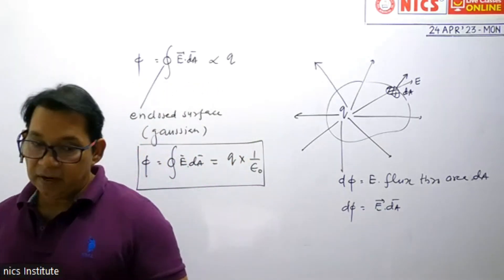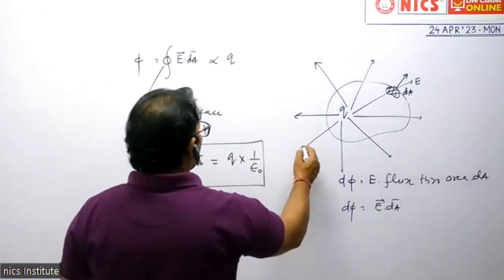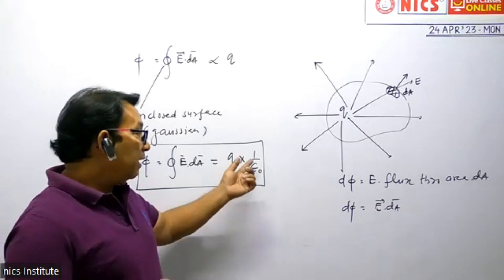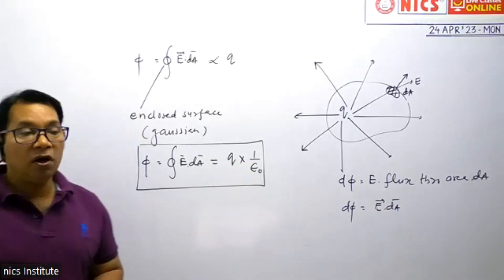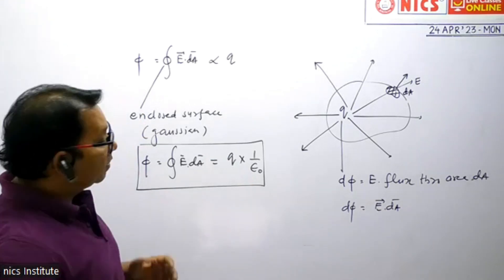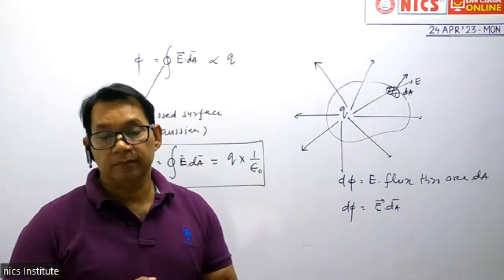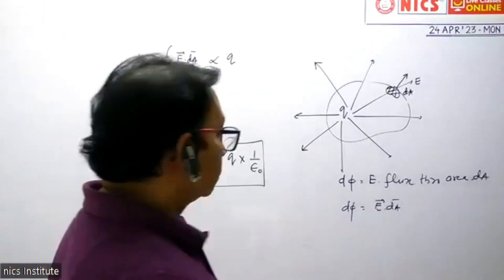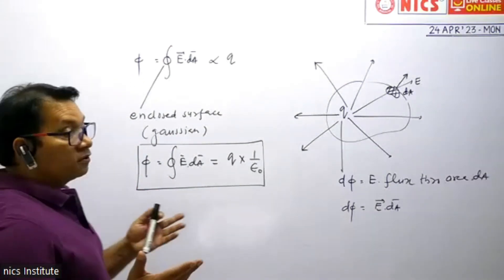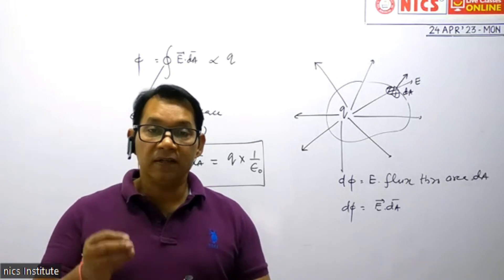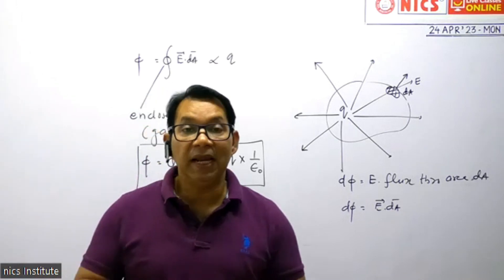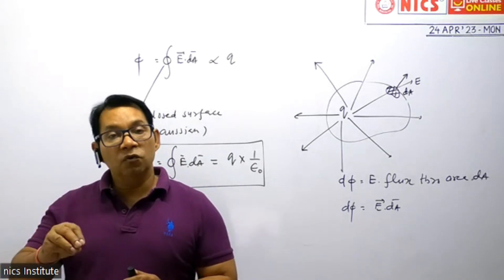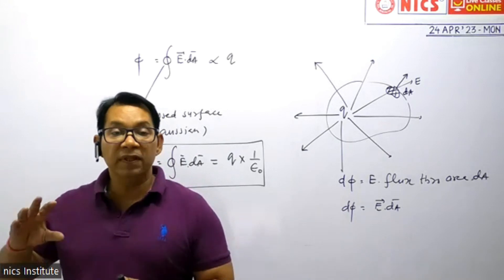You have to mention free space or air because we have taken epsilon naught. If there is another medium, then I will take one over epsilon. The epsilon naught term is valid only if the medium is air or free space. According to Gauss's law, the electric flux through a Gaussian surface is directly proportional to the charge enclosed, or it is equal to the product of charge enclosed and one over epsilon naught when the charge is in air or free space.